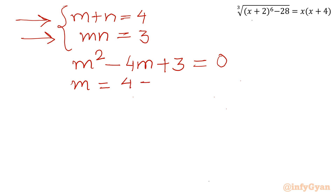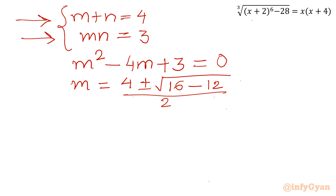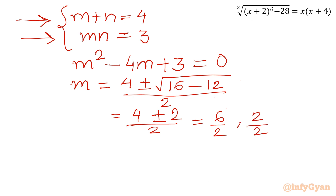Applying the quadratic formula: m equals (4 plus or minus square root of (16 minus 12)) divided by 2, which gives (4 plus or minus square root of 4) divided by 2, equals (4 plus or minus 2) divided by 2. So m equals 6/2 or 2/2, giving m values of 3 and 1.